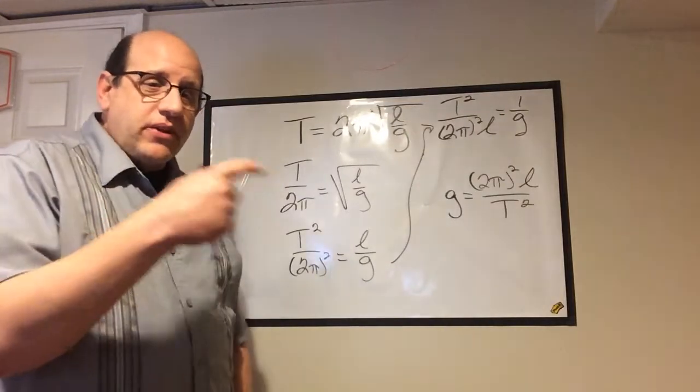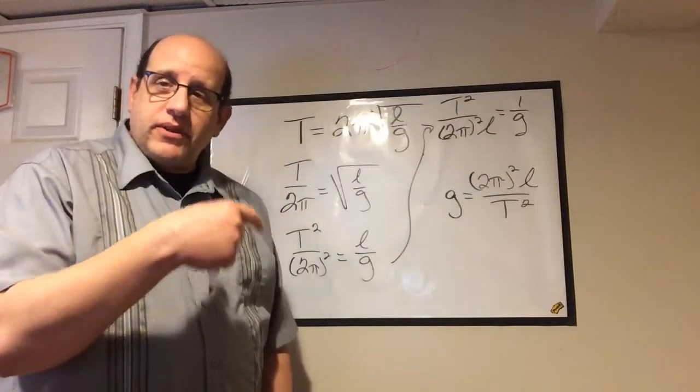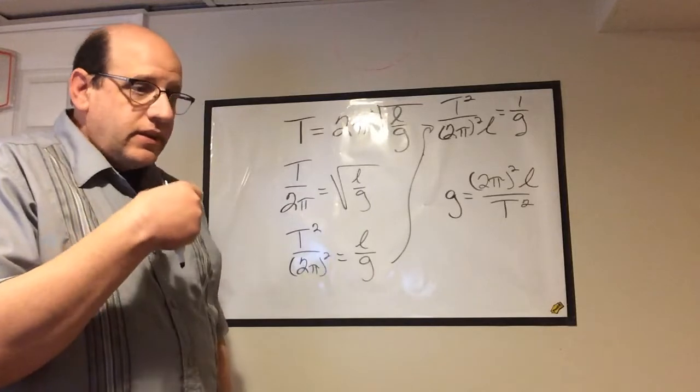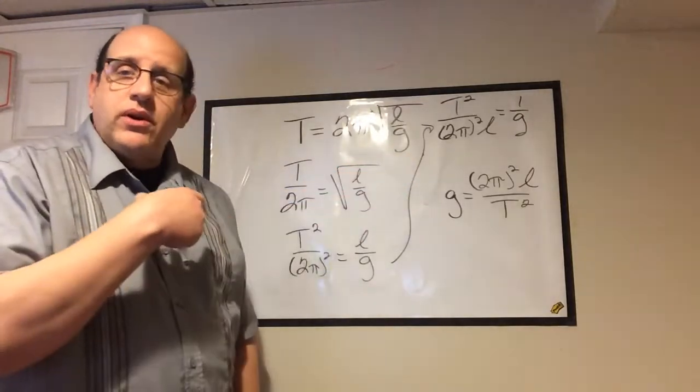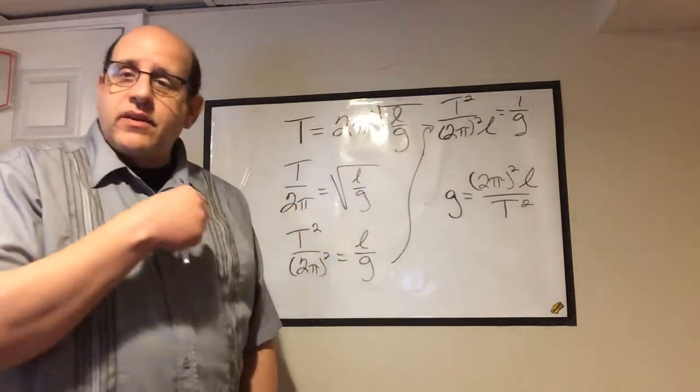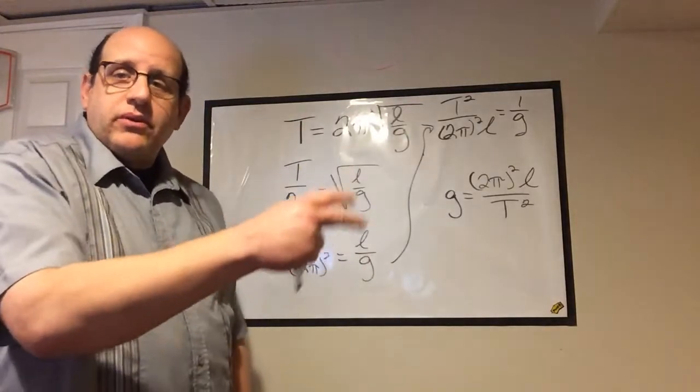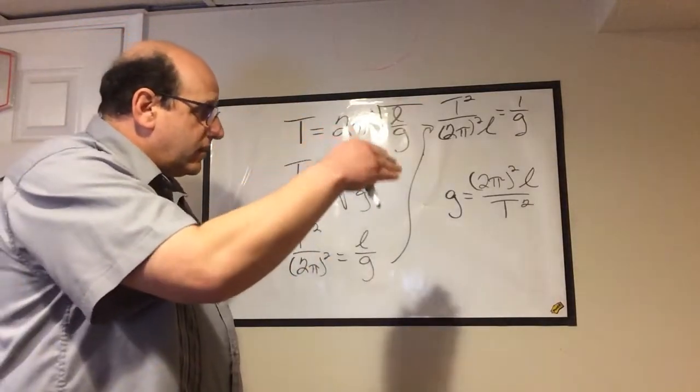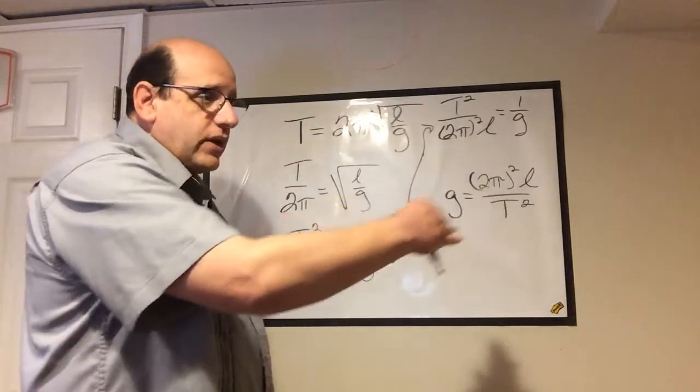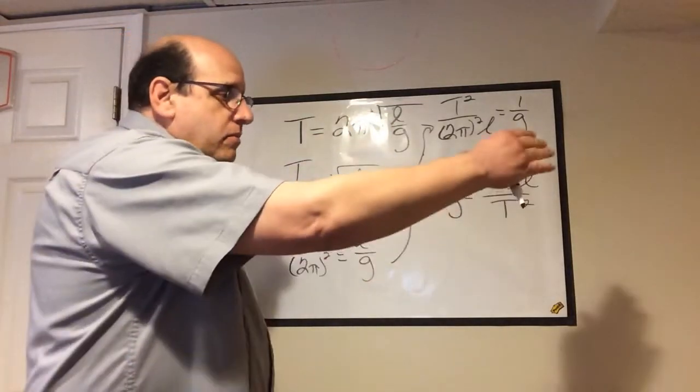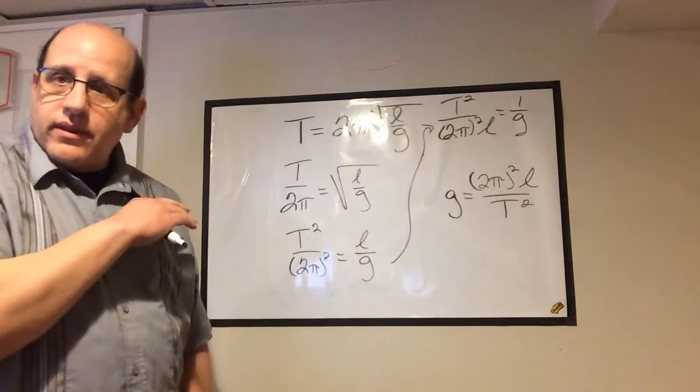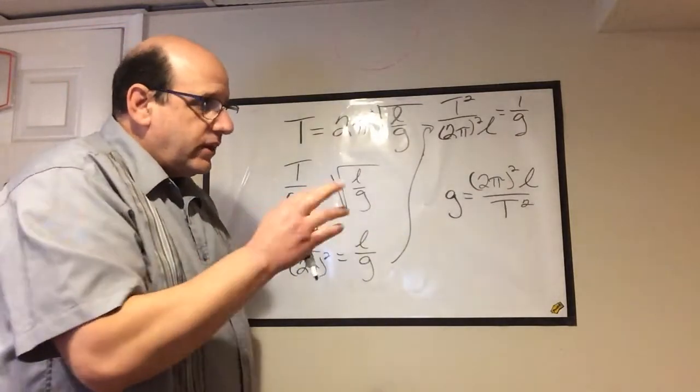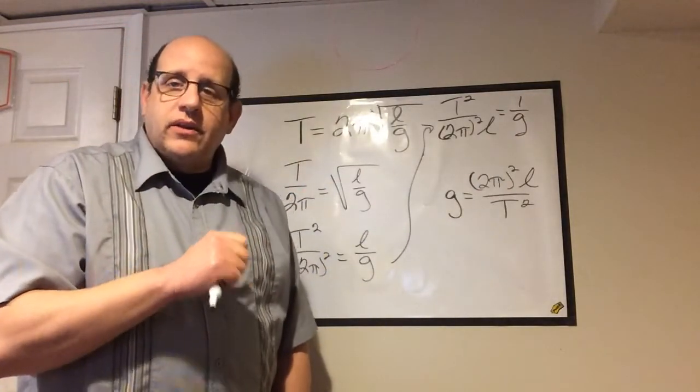What you should be figuring out when you're filling out these tables is that, just like I did before, mass doesn't affect the time period. Amplitude doesn't affect the time period. The only thing that affects the time it takes for one whole cycle to go through, one back and forth—and that's one time period—is the length of the pendulum.